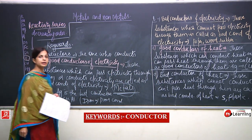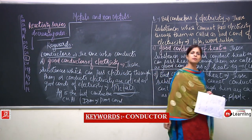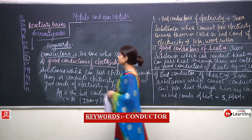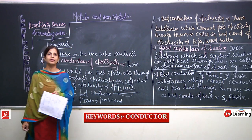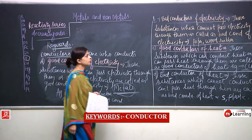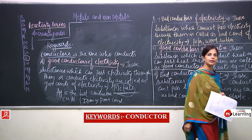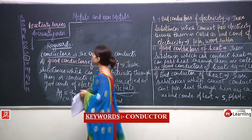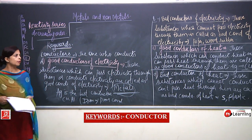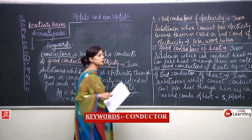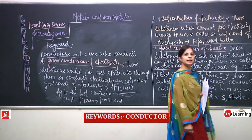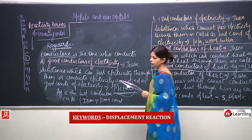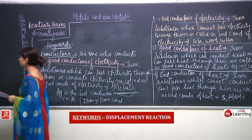You might think 'conductor' is a small word given as a keyword, but if a short note comes on conductors you have to write everything — good conductors of electricity, bad conductors of electricity, good conductors of heat, and bad conductors of heat. Conductors covers everything about substances that can or cannot pass electricity as well as heat through them. Now the next word is displacement reaction.